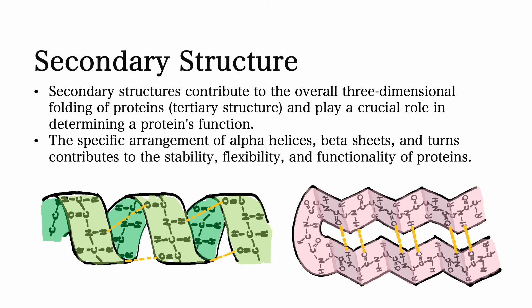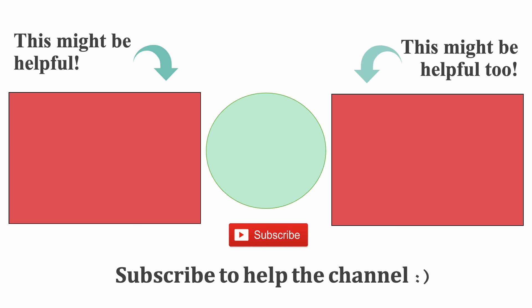Secondary structures contribute to the overall three-dimensional folding of proteins, which means that they contribute to tertiary structures. Therefore, they play a crucial role in determining the protein's function. The specific arrangement of alpha helices, beta sheets, and turns contributes to the stability, flexibility, and functionality of proteins. And that concludes this video.